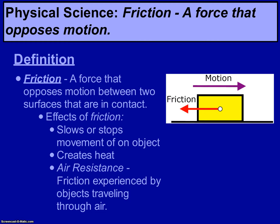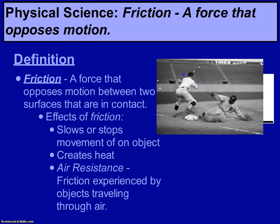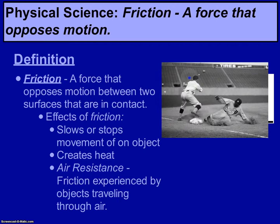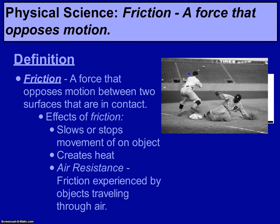Let me talk about a couple of the effects of friction. The first effect is it will slow or stop movement of an object. Take, for example, the baseball player sliding into home plate. Eventually, that baseball player will slow down and even stop.